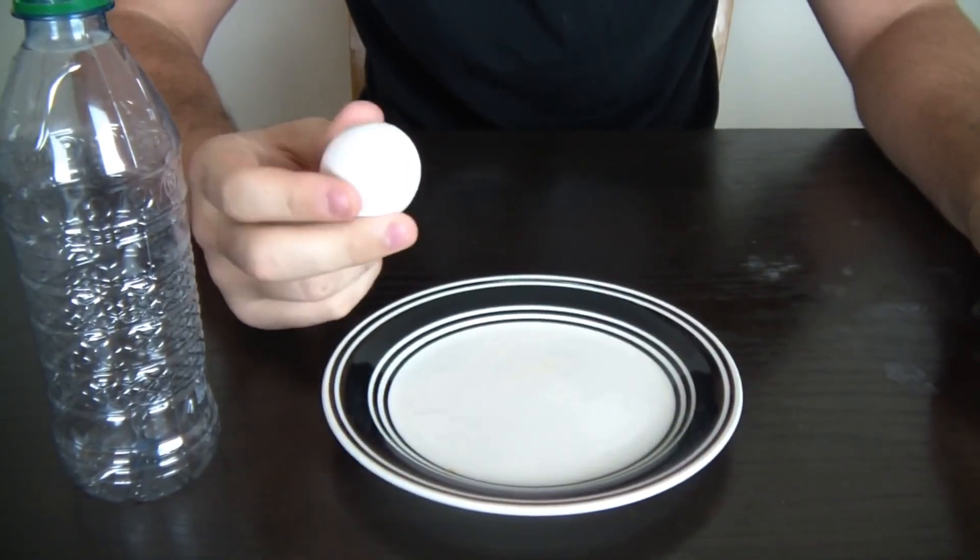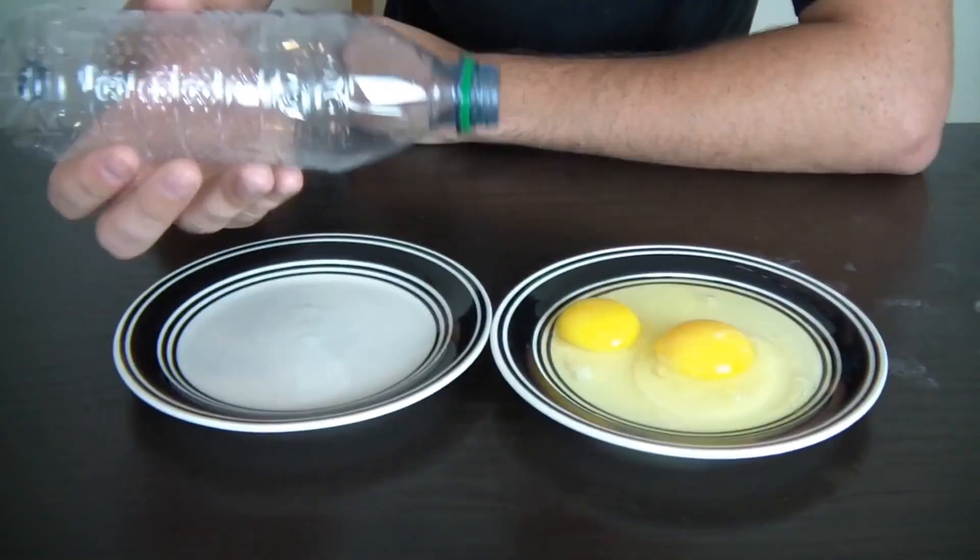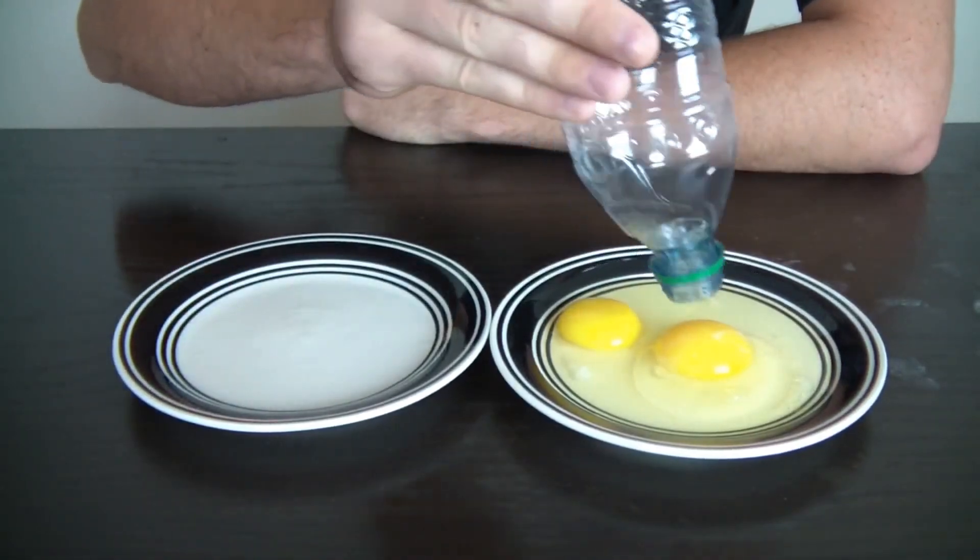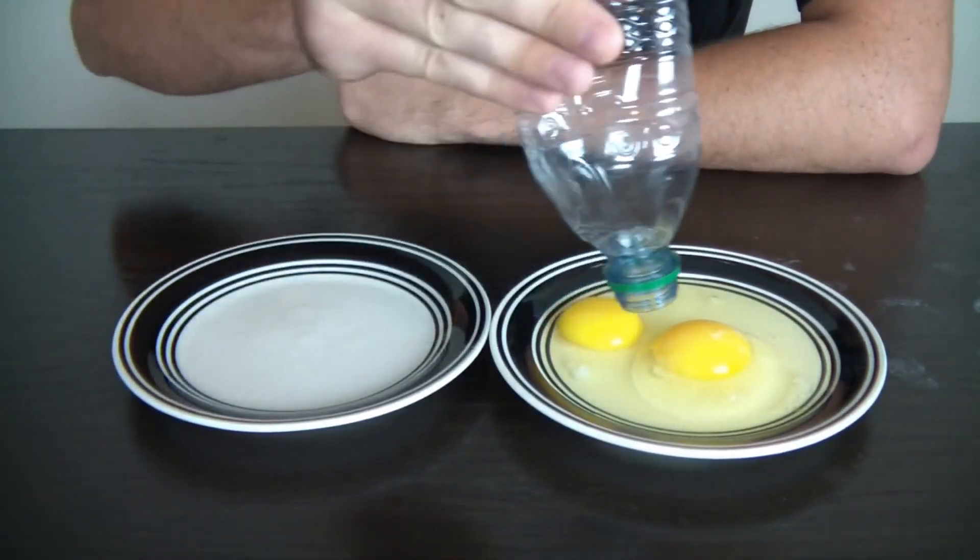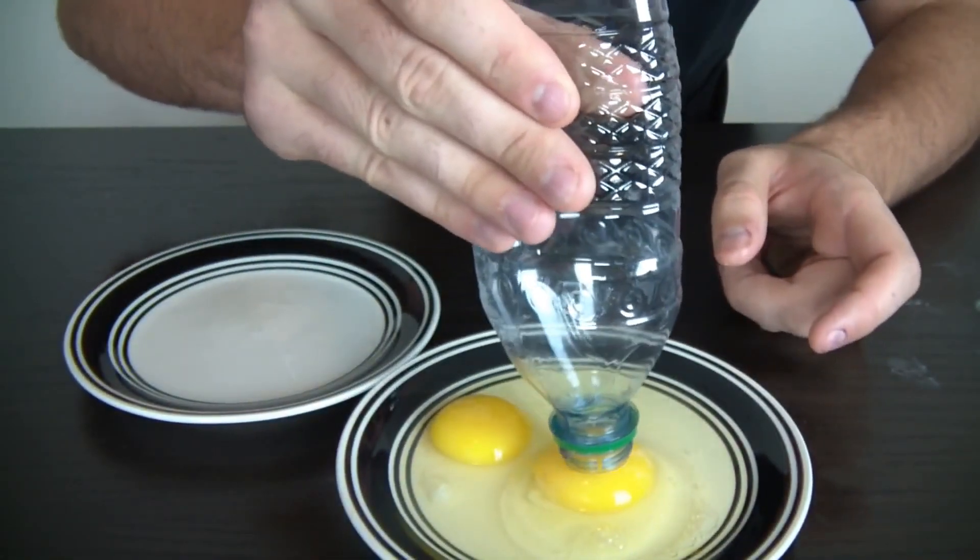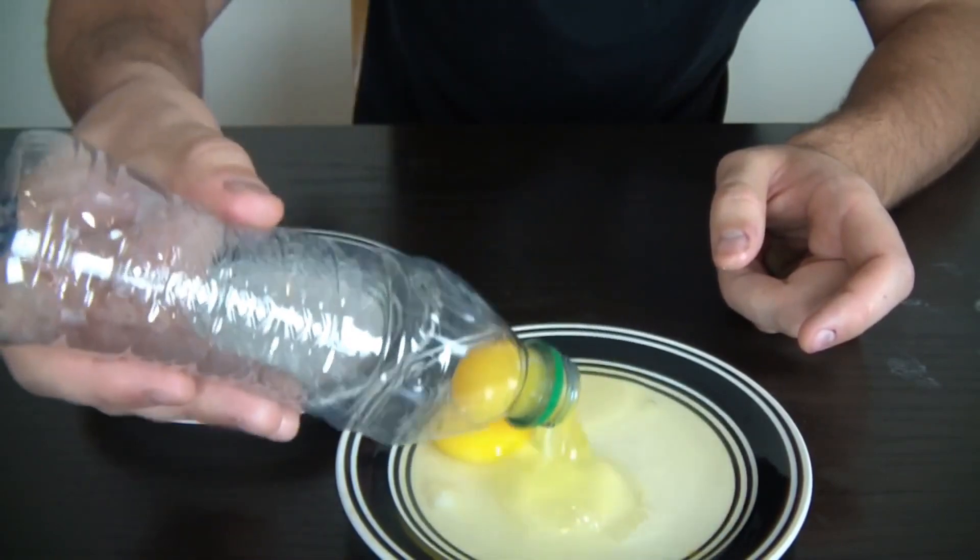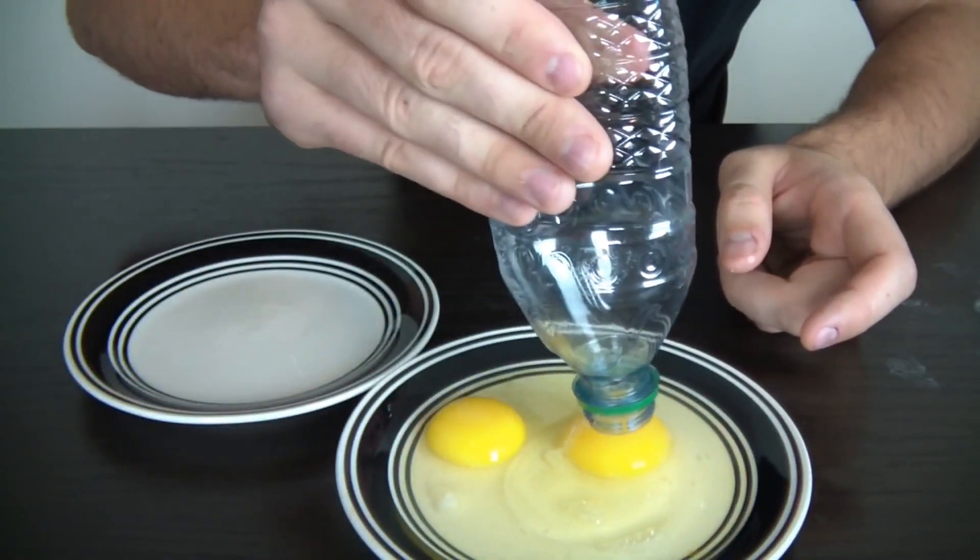I'm going to show you how to separate yolk from the white. All you're going to need is an empty bottle. Squeeze it, let's shake it closer, squeeze it and suck it in like that. Too fast.